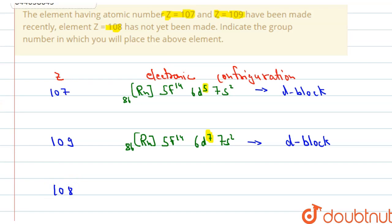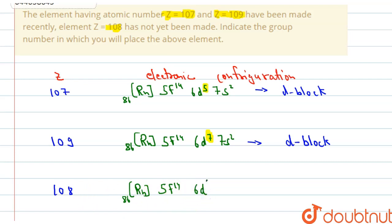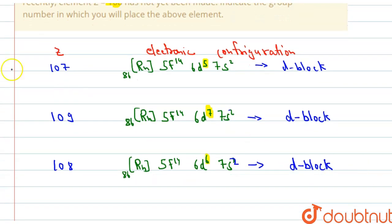Now for Z=108 — it has not been discovered, but we can still write its configuration. Starting from [Rn] (atomic number 86), we add 5f¹⁴, then the remaining electrons go into d orbital: 6d⁶, 7s². The last electron is going into the d orbital, so this is also a d-block element.